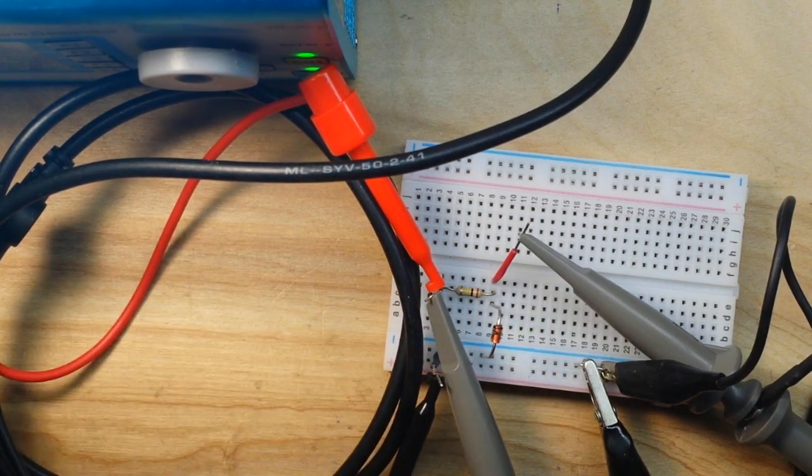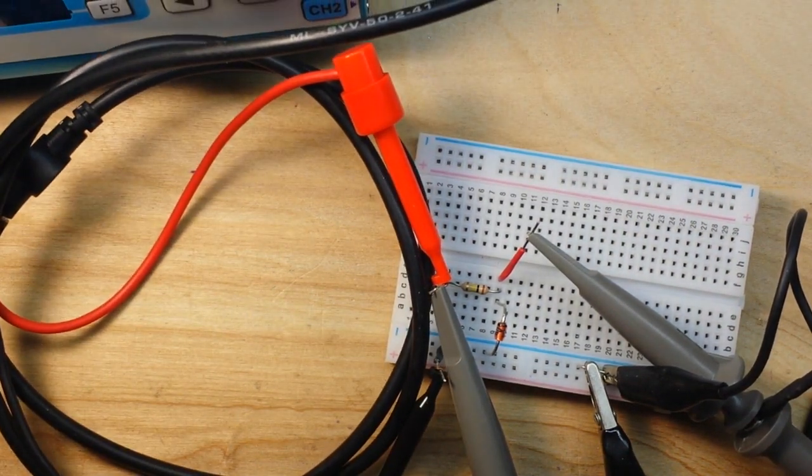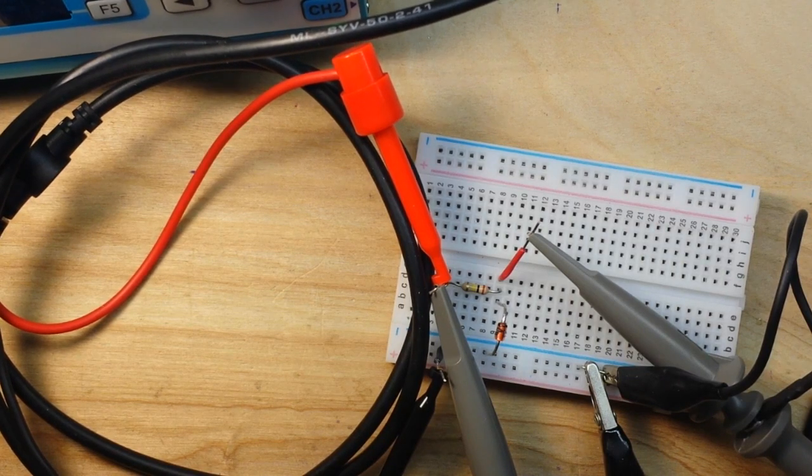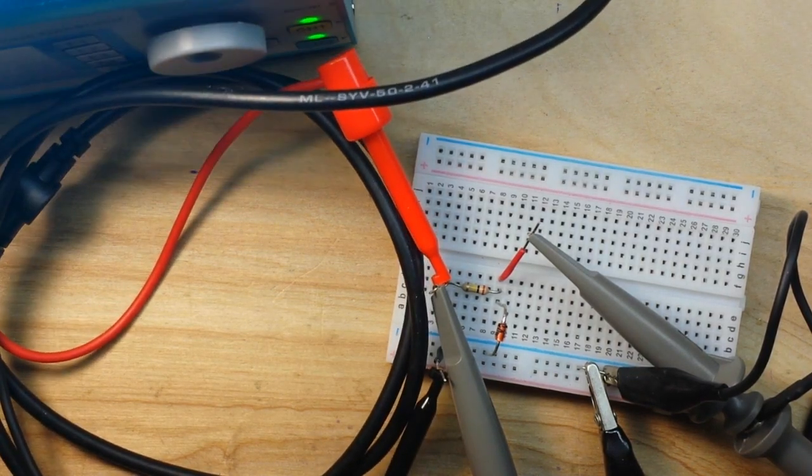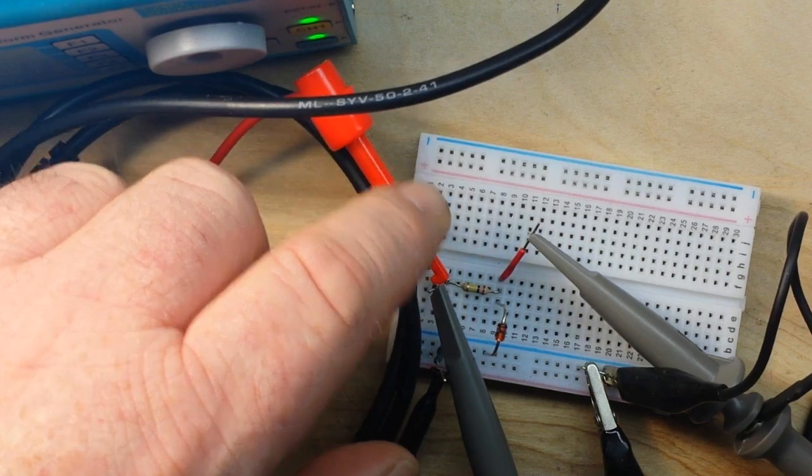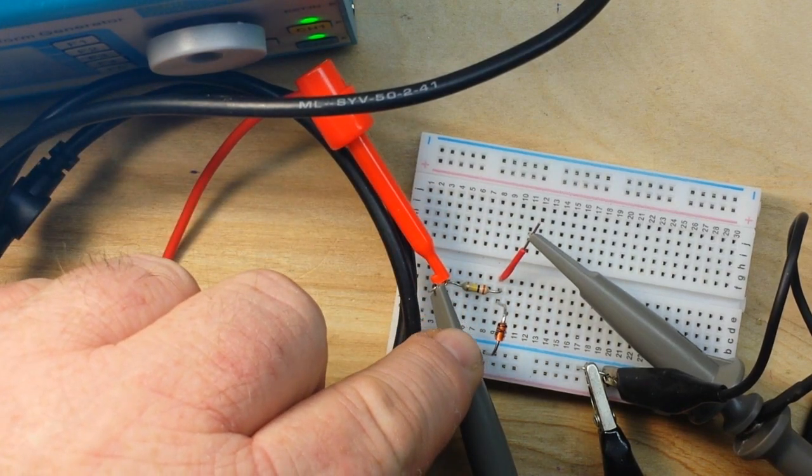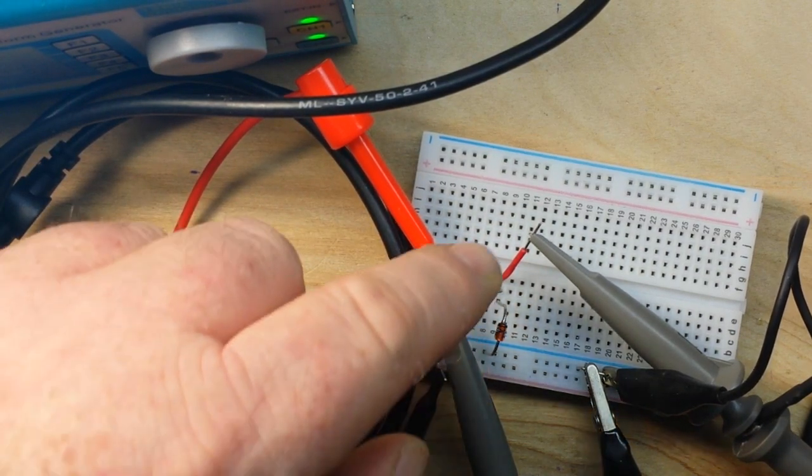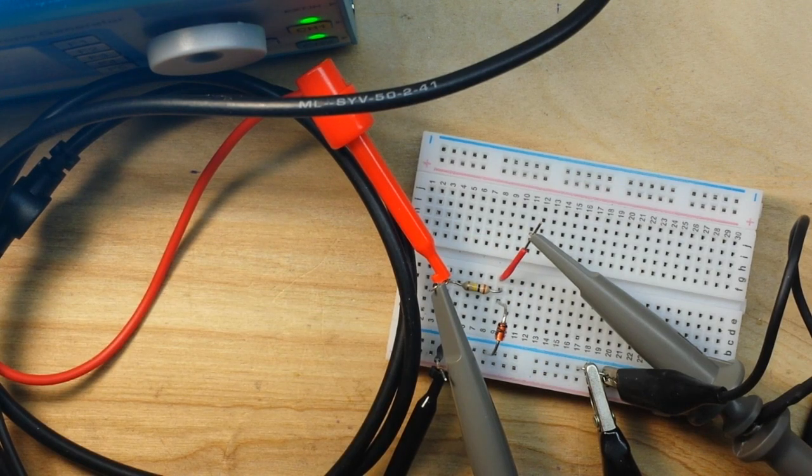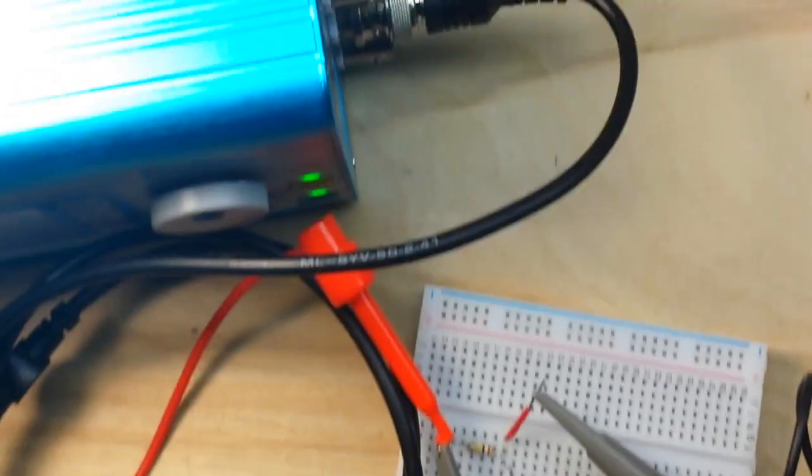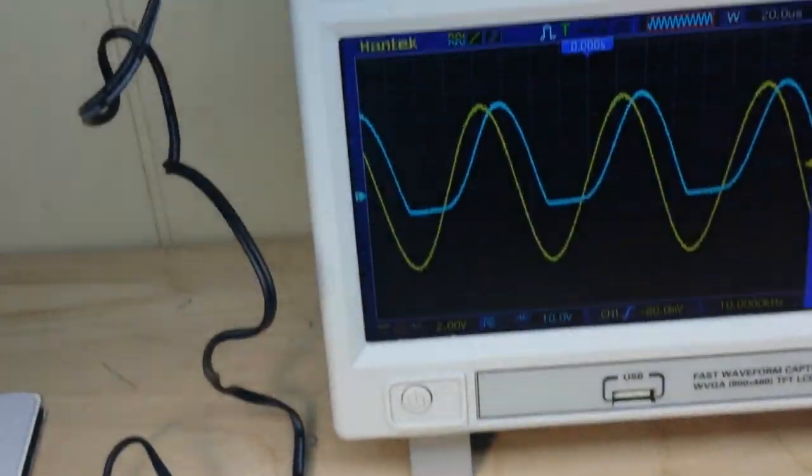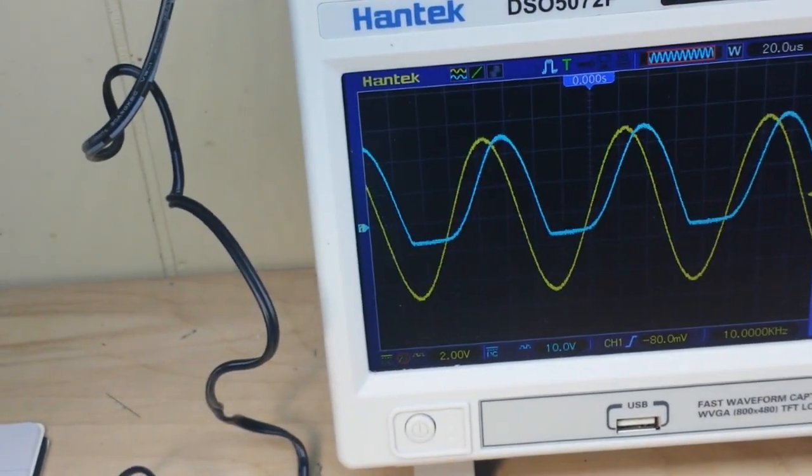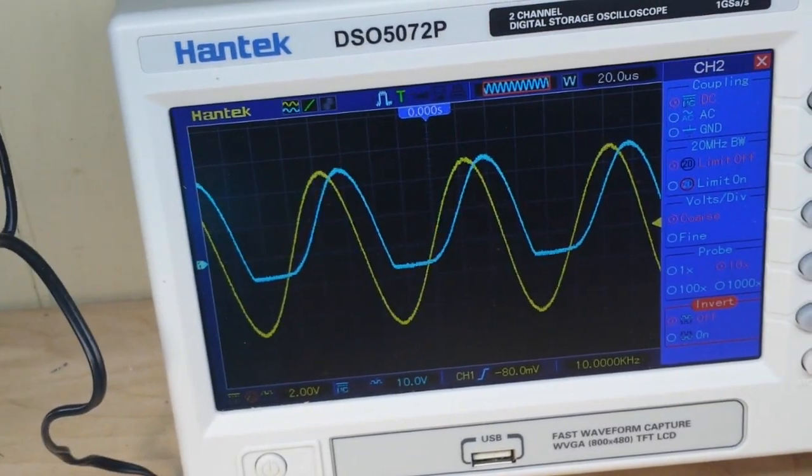So I am feeding in a 10 kilohertz, 10 volt peak-to-peak sine wave right here, passing it through that resistor and our reverse biased Zener and picking it up here. So if we take a look at the oscilloscope, pardon the bumpiness while I adjust here so we can see what we're doing.